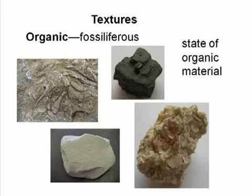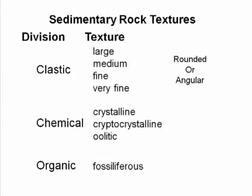The texture of organic division sedimentary rocks is fossiliferous. These are categorized based upon the state or form of the organic material. In summary, five terms are used to specify the textures of sedimentary rocks. Clastic division rocks have a clastic texture and are made of rock fragments ranging in size from large to medium to fine to very fine, with rounded and angular natures also considered. The three textures of chemical division sedimentary rocks are crystalline, cryptocrystalline, and oolitic. The texture of organic division sedimentary rocks is fossiliferous.